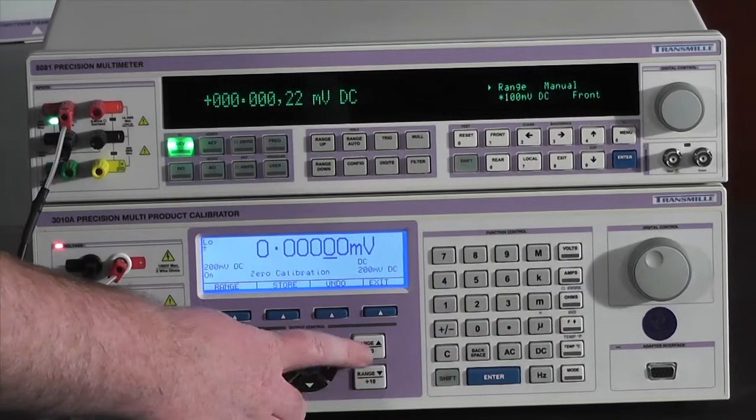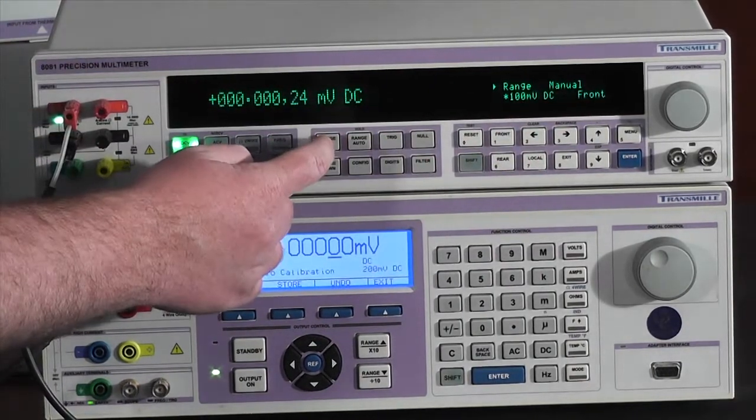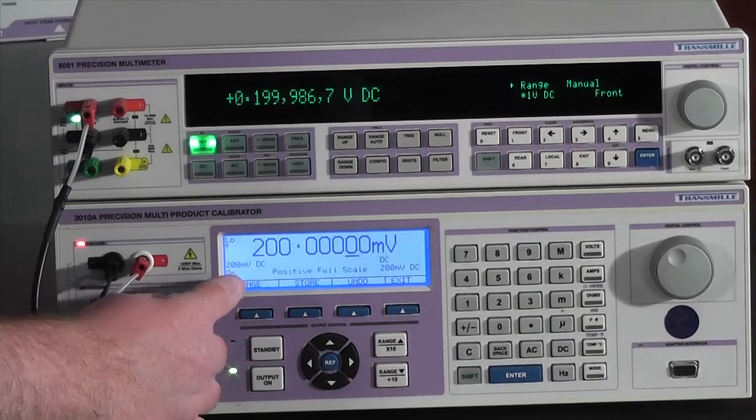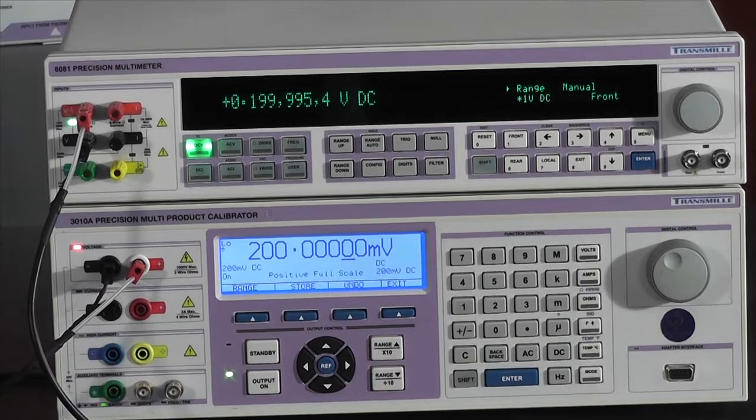I am now going to press range up to go to the next calibration point. At this point, I'm also going to change the range on my multimeter. So pressing range up has now gone to the positive full scale adjustment point.